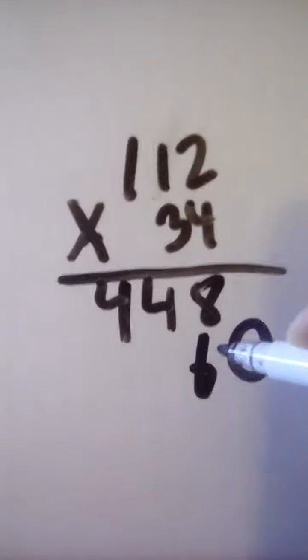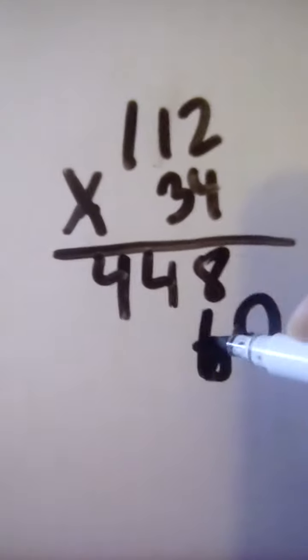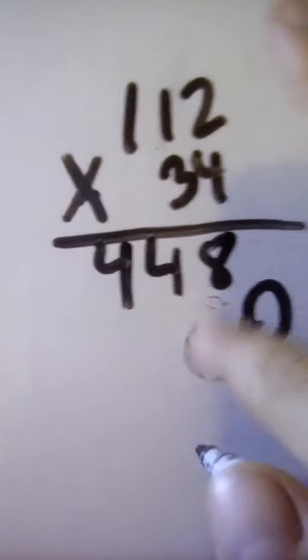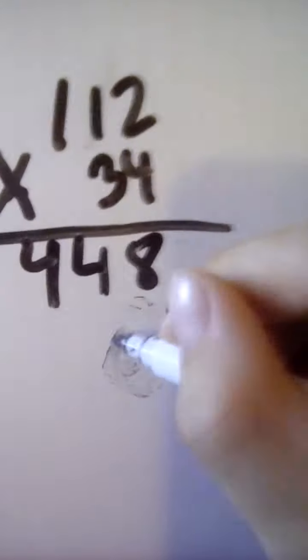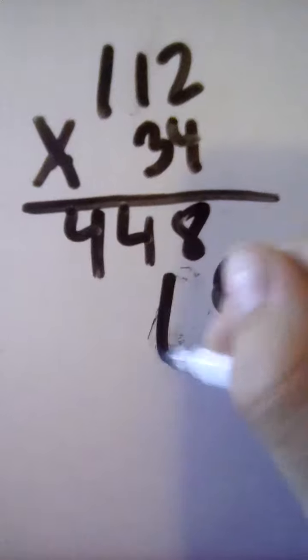Two is 6. I mean, I messed that up a little bit, sorry, let me erase it. 3 times 2 is 6, right.